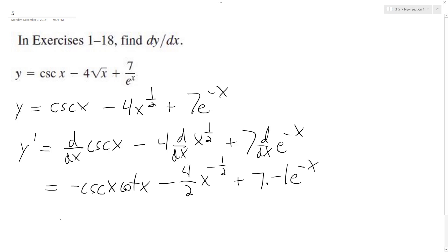Finally, what we get is negative csc x cot x minus 2x raised to the negative one-half—or I could rewrite it like this—minus 7e raised to the negative x.